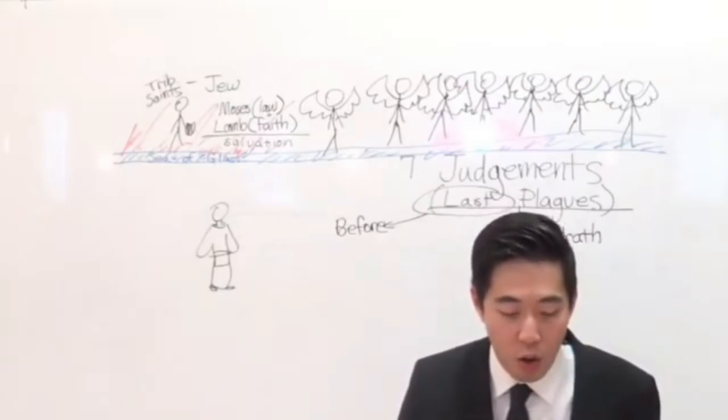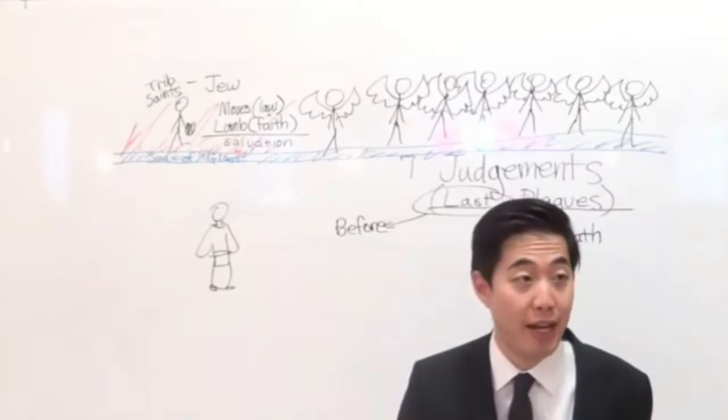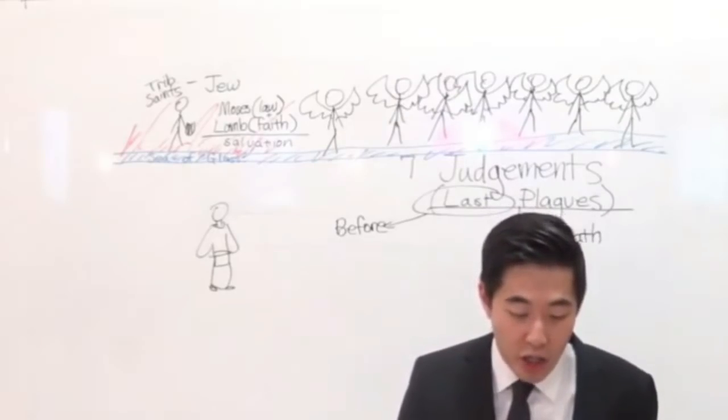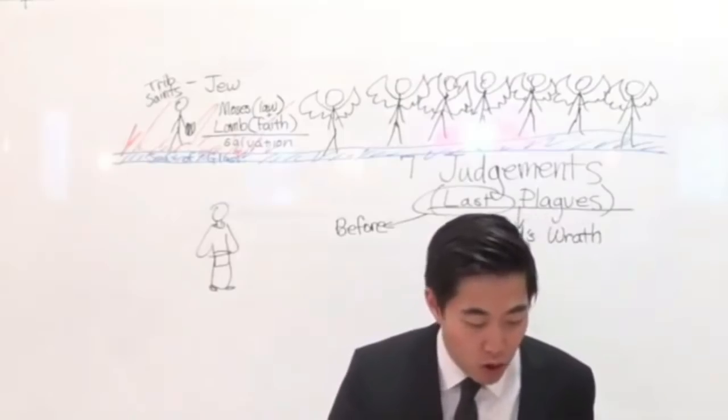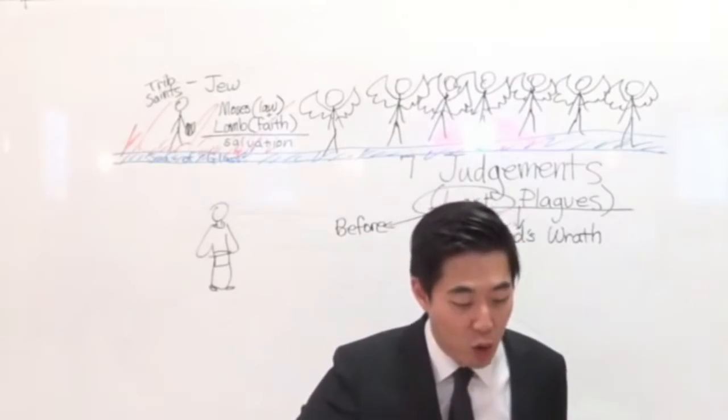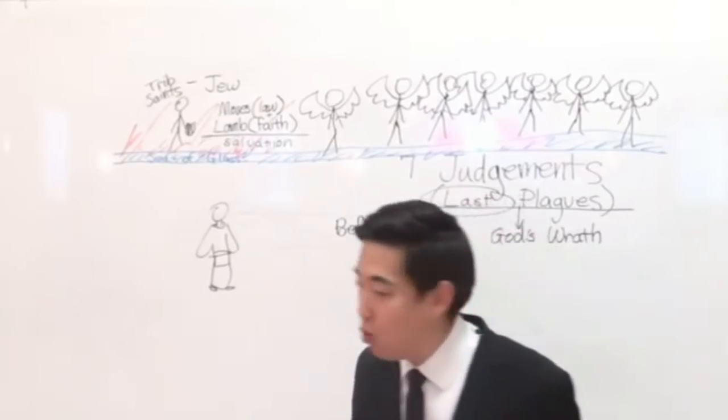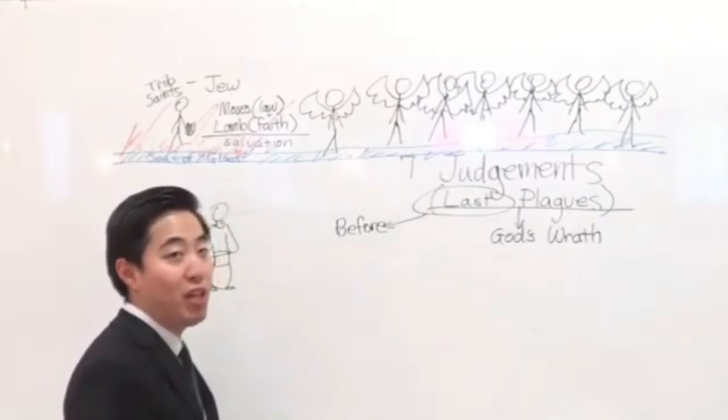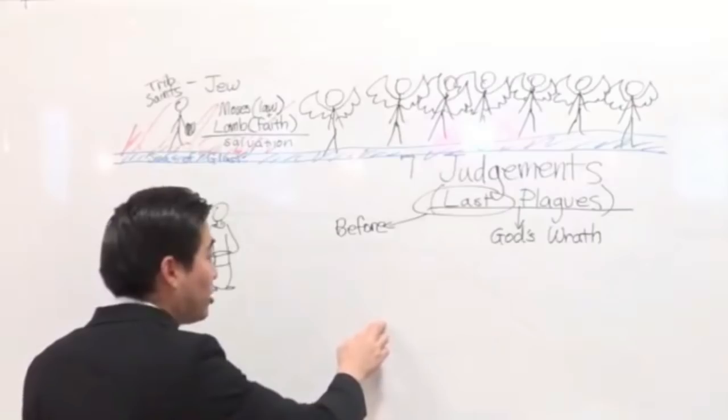For thou only art holy. That's right, there's only one person that is holy, and that is God Almighty. There's no other person who is holy. For all nations shall come and worship before thee. Notice, every nation around the world is going to come to God and worship Him. For thy judgments are made manifest. Why? Because His judgment, where He's sending all the plagues, judging the world, that's going to put the fear upon the nations.